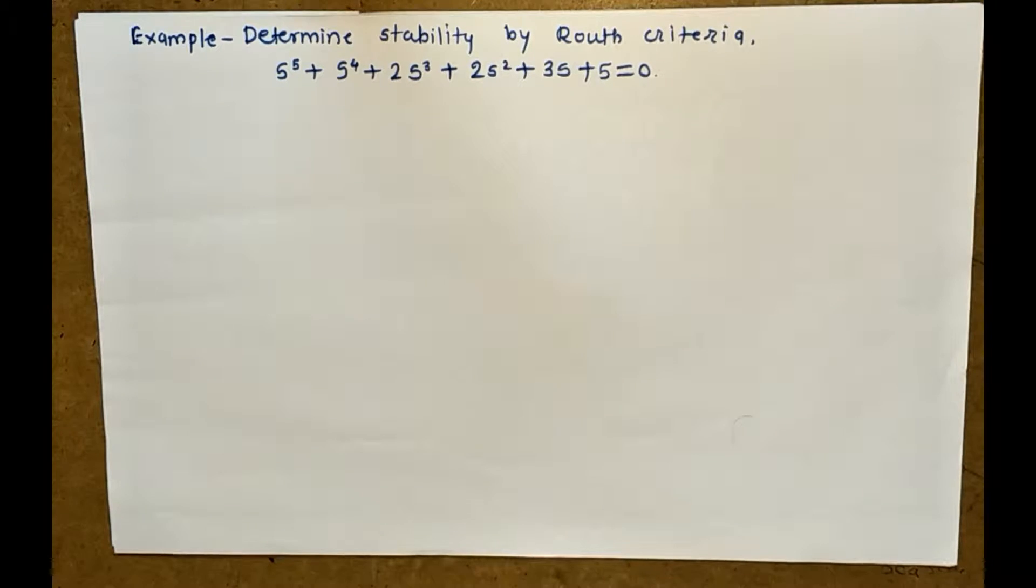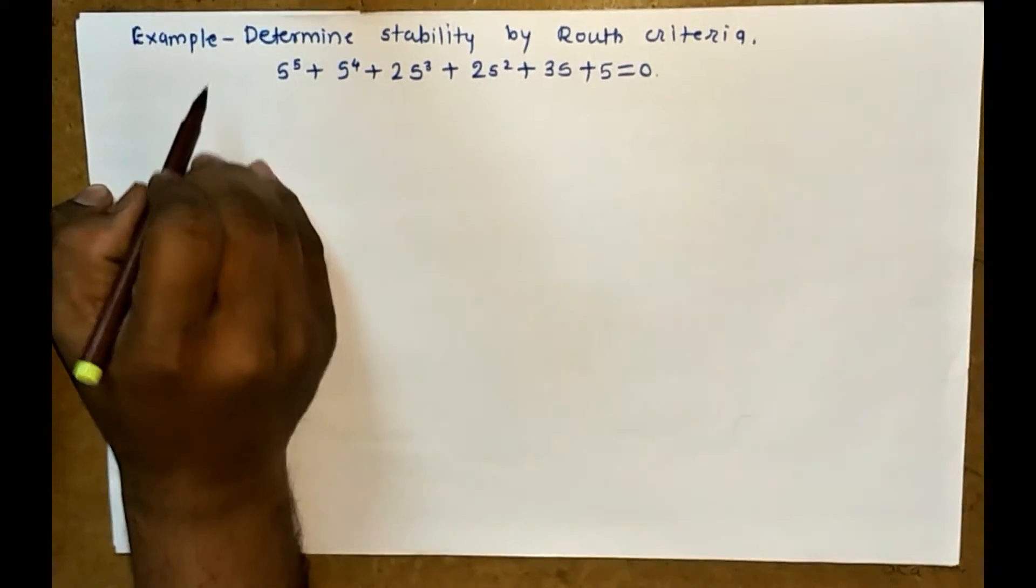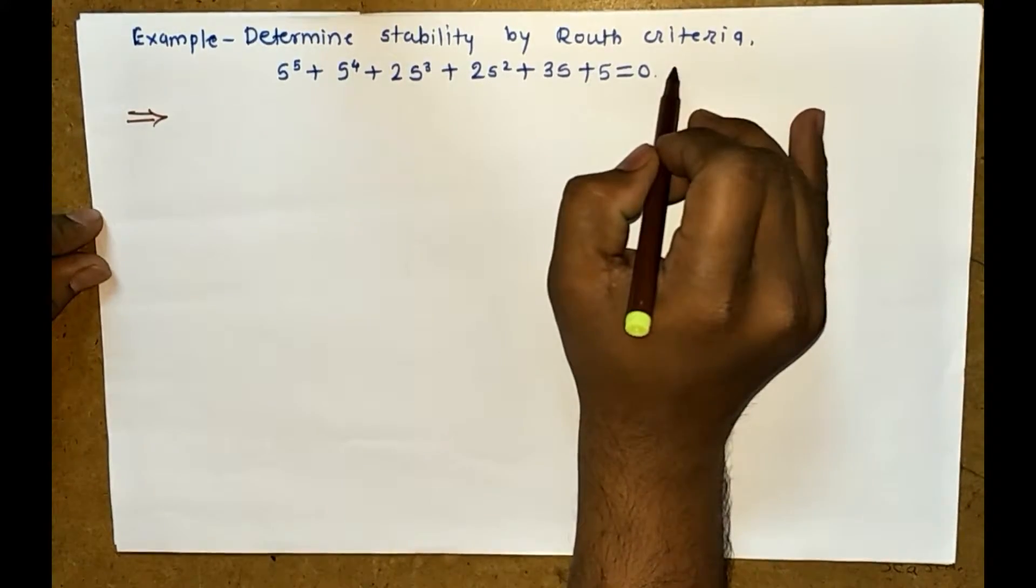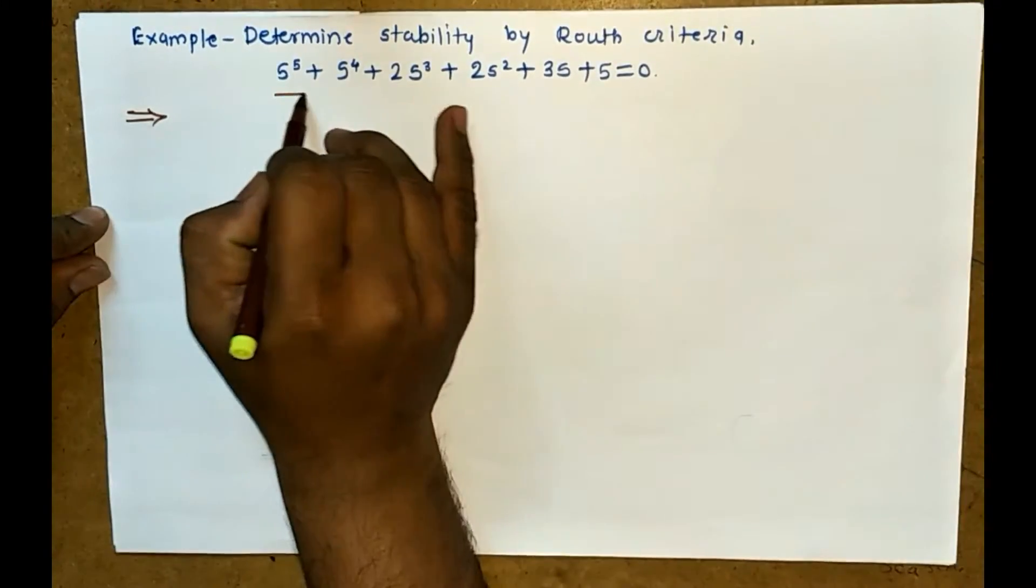This is the given example. For this we have to find out the stability, whether the system is stable or unstable. This is the characteristic equation.